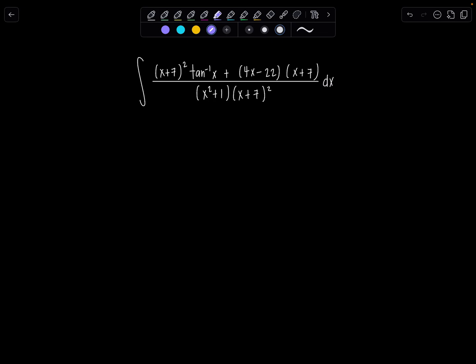You start off using a similar approach that I did for the most recent integral of the day. I'm going to split this into two right off the bat. I'm going to group x plus 7 squared tan inverse of x over the denominator, and then these terms here over the denominator.